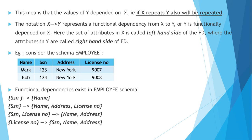Whenever SSN is repeated in a tuple, name, address, and license number will also be repeated. Another functional dependency involves license number, which is also unique per person — no two employees share the same license number. So whenever license number is repeated, all other details are automatically repeated. There is a functional dependency from license number to SSN, name, and address.